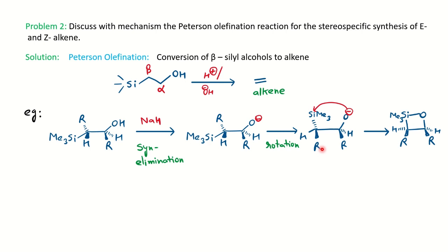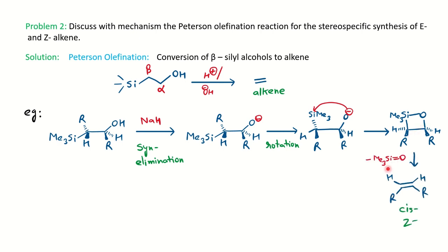You can notice we started with a trans arrangement. When you rotate, the position of R comes to the same side as the other R — they become cis. So the ring shows the silyl group in the cis position to R. After elimination of trimethylsilyl oxide, you get the cis or Z-alkene. This is very important for stereochemistry. In competitive exams, they will give you different stereochemistry options for the product and you have to find out the correct stereochemistry.